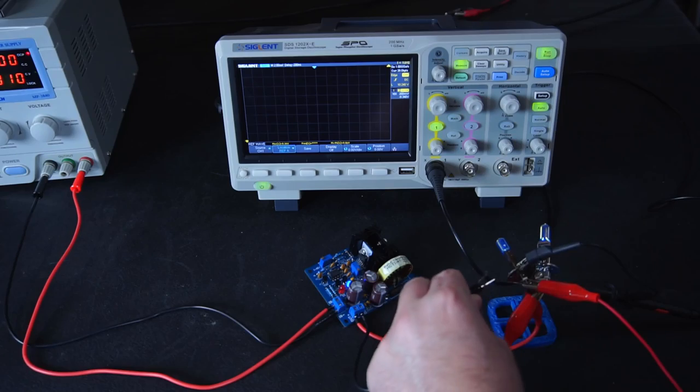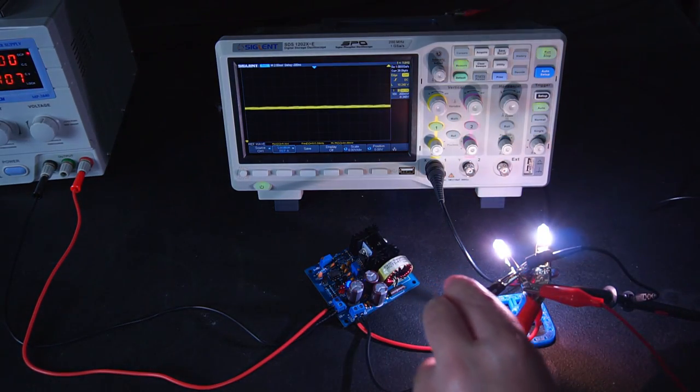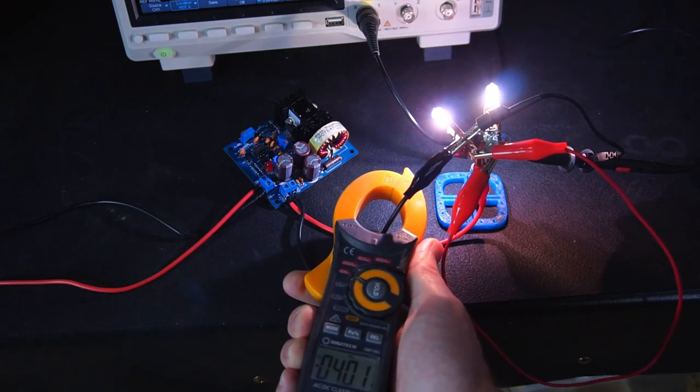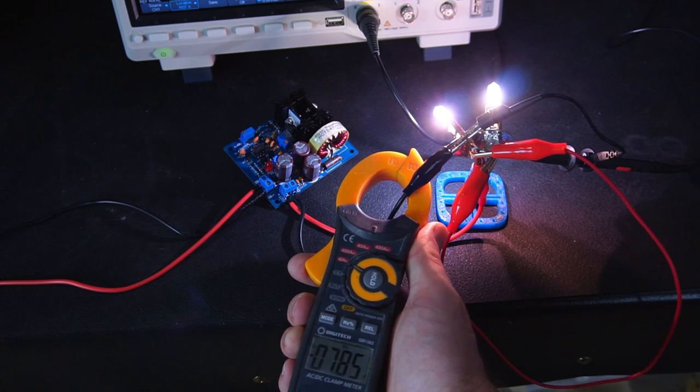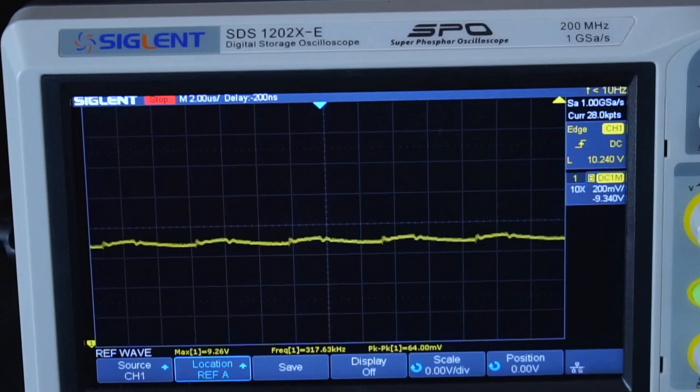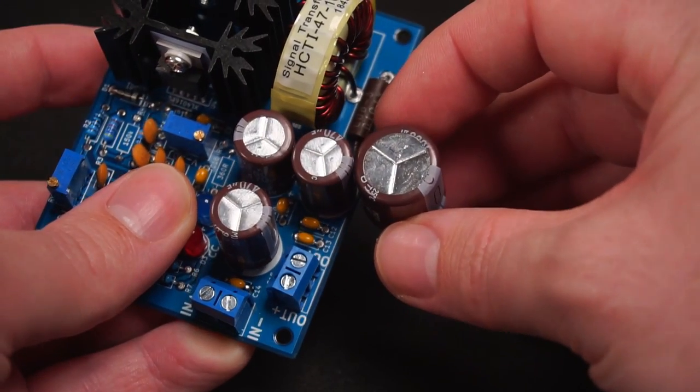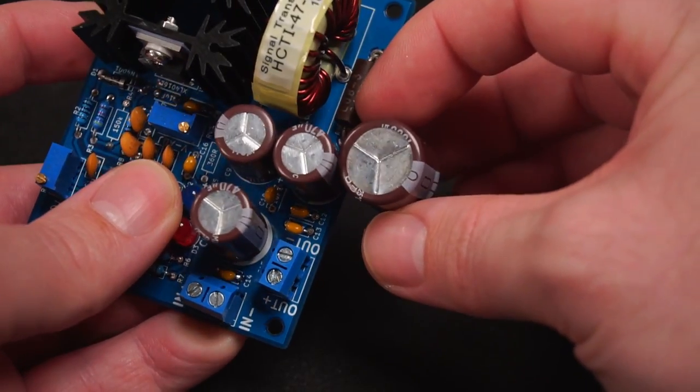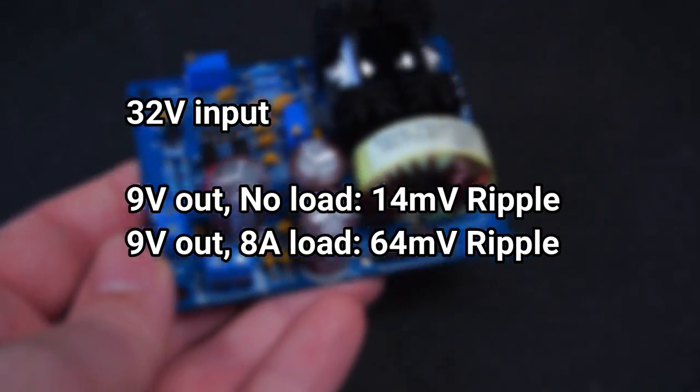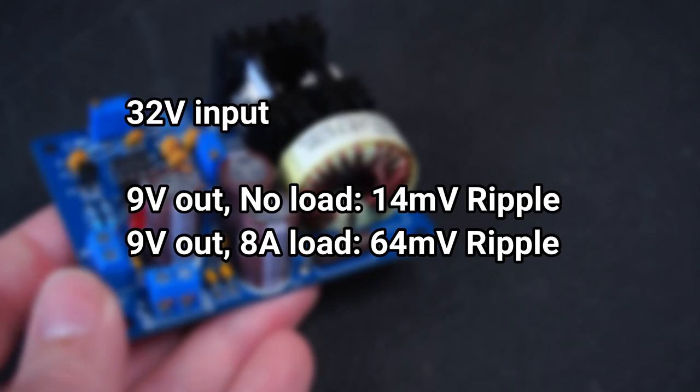Alright time to whack a full 8A load onto my buck converter and test its limits. Even at 8A of current there is minimal high frequency ripple. The 64mV peak to peak ripple is mostly low frequency ripple that could easily be filtered out with a slightly larger output capacitor if required.